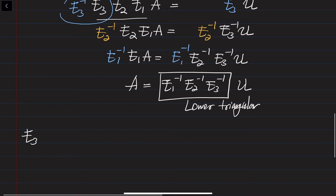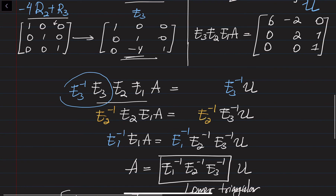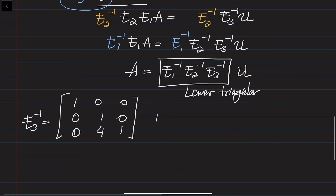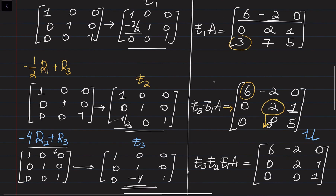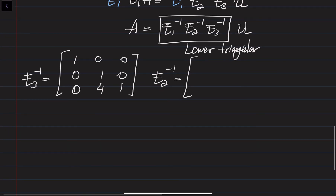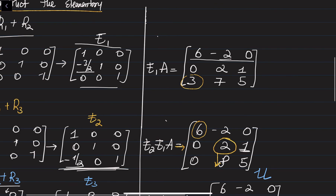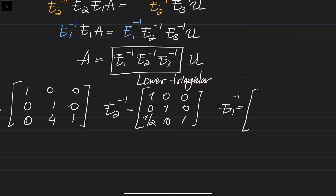The inverse of E3 is [[1, 0, 0], [0, 1, 0], [0, 4, 1]] — just put plus instead of minus. The inverse of E2 is [[1, 0, 0], [0, 1, 0], [1/2, 0, 1]]. The inverse of E1 is [[1, 0, 0], [3/2, 1, 0], [0, 0, 1]] — replacing -3/2 with +3/2.